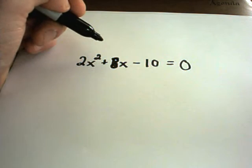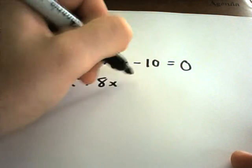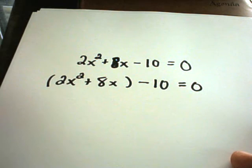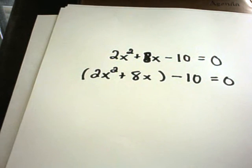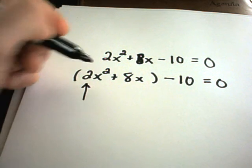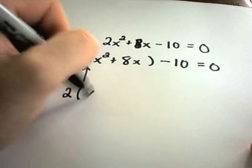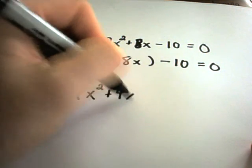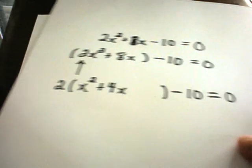You do the same thing: group your x terms and put them in parentheses. On this one, though, you have to be careful because you need the coefficient on x squared to be 1. There's a 2 in front, so factor that out. Pulling the 2 out leaves x squared plus 4x inside the parentheses, and the minus 10 is still there.